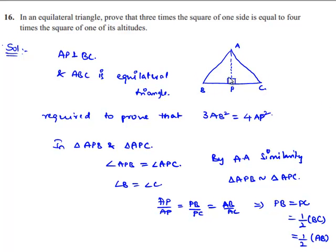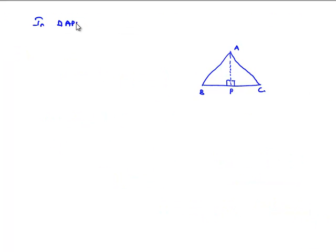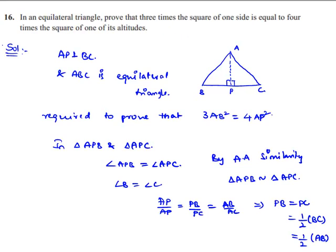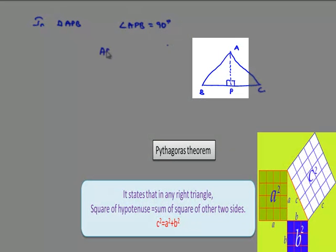Now, if we consider right-angle triangle APB, angle APB is equal to 90 degrees. So, here by applying the Pythagorean theorem, we get hypotenuse square, that is AB square, is equal to sum of square of other two sides, that is AP square plus BP square.